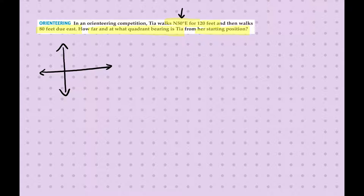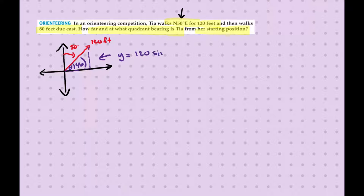The first vector is a quadrant bearing — we go north and then towards the east by 50 degrees. So this vector is 120 feet and it is 50 degrees east of north. We need to break this into component form. The difference from 90 degrees makes this a 40-degree angle, so the y-component is 120 times sine of 40 degrees, and the x-component is 120 times cosine of 40 degrees.